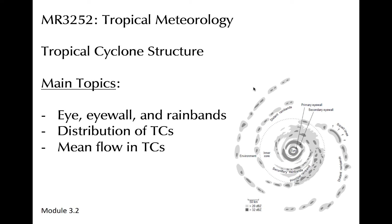This module contains a description of mature tropical cyclone structure. We'll discuss the distribution of TCs globally, the mean flow in TCs, and the eye, eye wall, and rain bands.